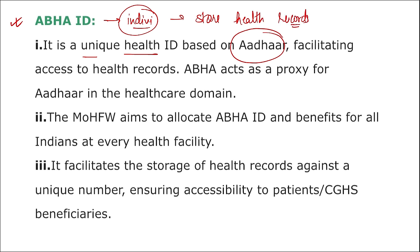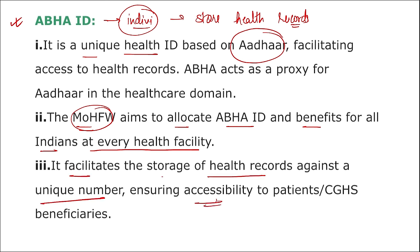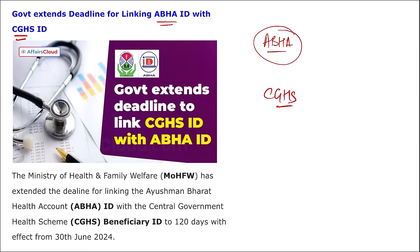The Ministry of Health and Family Welfare aims to allocate ABHA IDs to all Indians at every health facility, facilitating the storage of health records against a unique number and ensuring accessibility to patients and CGHS beneficiaries. CGHS stands for Central Government Health Scheme — all central government employees get free medical services, with medical expenses borne by the government at panel hospitals.